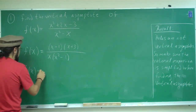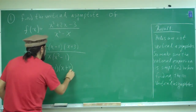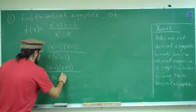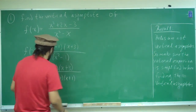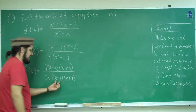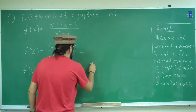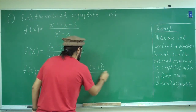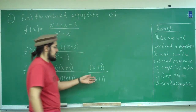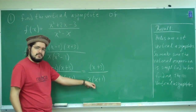So f of x equals x minus 1 times x plus 3, all over x times x minus 1 times x plus 1. The x minus 1 factors cancel, which implies that x equals 1 is a hole. Now the simplified expression is x plus 3 divided by x times x plus 1, and we can't simplify any further. Now we equate the denominator to zero to find the vertical asymptotes.